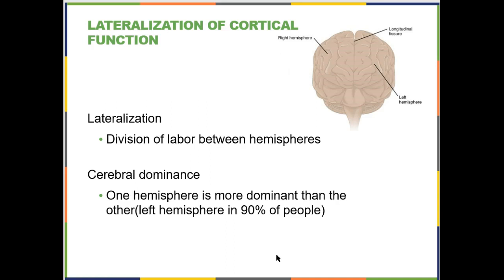Talking about the way the cerebral cortex works: the first thing we need to know is lateralization, which means the two sides of your brain don't necessarily do the same thing. There's also a phenomenon called cerebral dominance, where one hemisphere is more dominant than the other. You do have primary motor cortex in both hemispheres, but one is stronger, and that hemisphere is what leads to being right-handed or left-handed. Because your motor axons cross over the midline in the medulla oblongata — the decussation of pyramid fibers — the right side of your brain controls the left side of your body and vice versa.